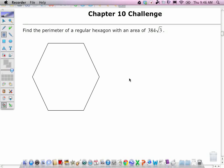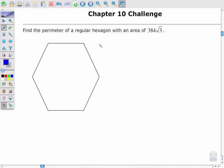Find the perimeter of a regular hexagon with an area of 384 times the square root of 3. Now, we find the area of a hexagon using our apothem formula, so area equals 1 half times the apothem times the perimeter. You'll probably use this formula to approach this question.